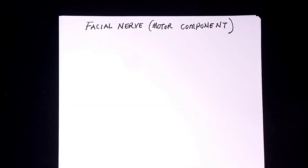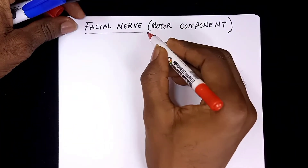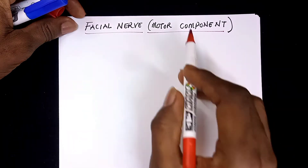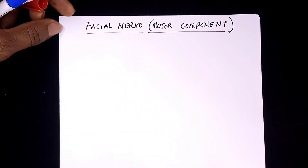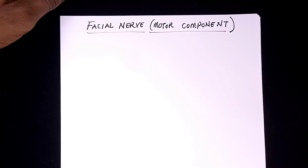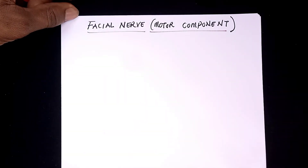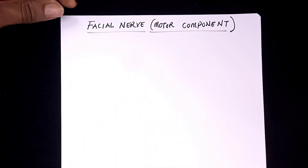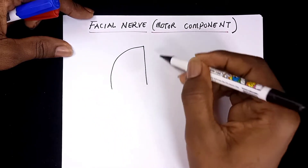The next aspect of this video is going to show us a brief anatomy of the facial nerve. In this part we are going to focus on the anatomy of the facial nerve, but we will be concerned only about the motor component so that we can make inferences from our clinical findings. Let us quickly reconstruct the brain so that we can have our bearing — let's assume this is one hemisphere of the brain.